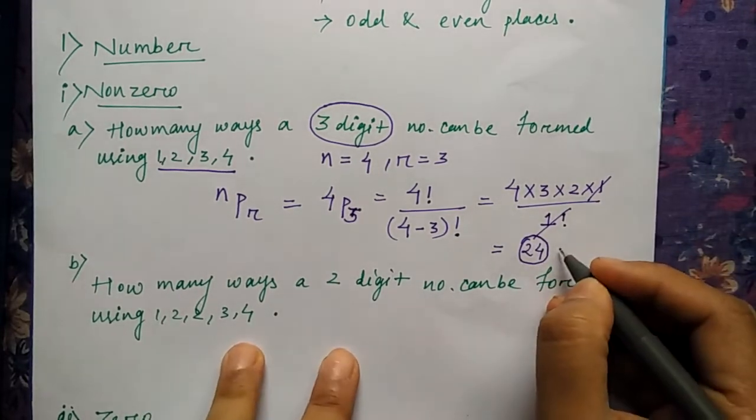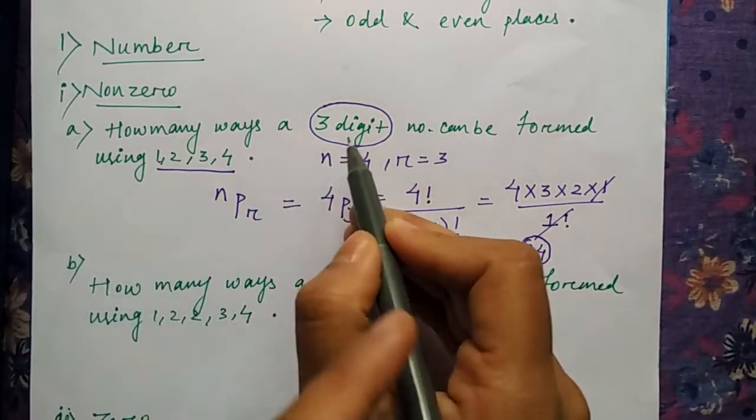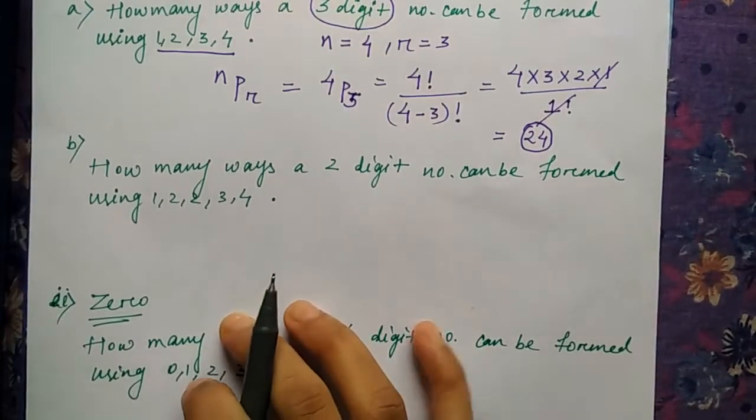And what will be the answer here? 24. So in 24 ways you can arrange these four numbers into a three-digit number.